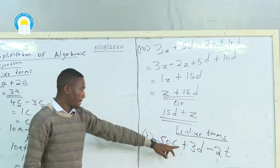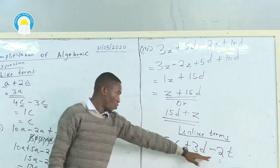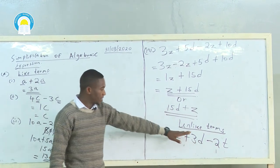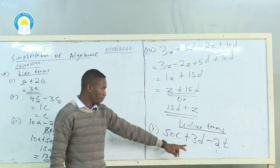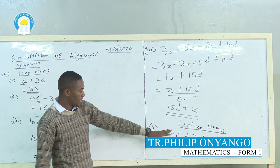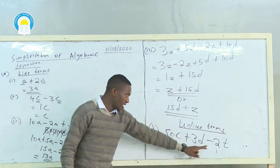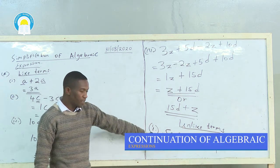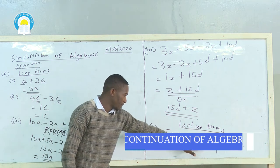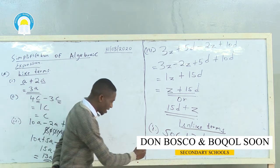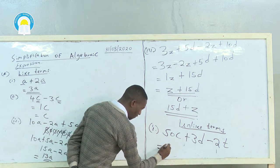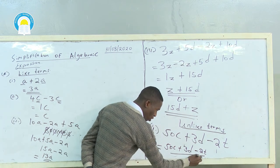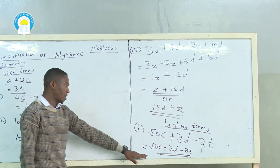Now for unlike terms: when we have 50C plus 3D minus 2T, we see that 50 has letter C, 3 has letter D, and 2 has letter T. These numbers do not resemble each other — we have C, D, and T. Therefore, you can neither add nor subtract them. Your final answer is simply to copy the same expression: 50C plus 3D minus 2T.